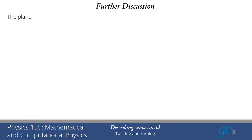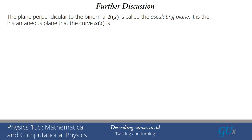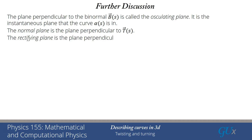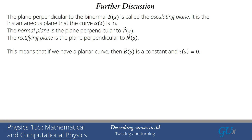Here's a summary of definitions. The plane perpendicular to the binormal is called the osculating plane — for a planar curve, this is the plane the curve lies in. The normal plane is the plane perpendicular to the tangent vector. The rectifying plane is the plane perpendicular to the normal vector. If we have a planar curve, then B(s) is a constant and tau(s) must equal zero, since tau is proportional to the derivative of B with respect to s. So the torsion tells us how the curve deviates from a plane, while the curvature tells us how the curve curves inside the plane.